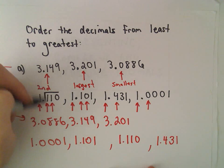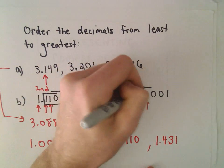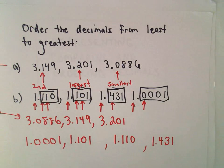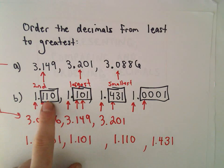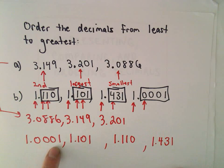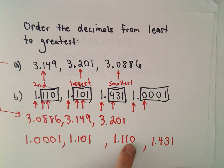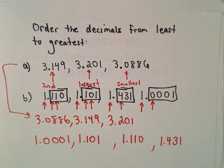Again, you could just kind of look at the decimal part and order them that way as well. So this to me kind of looks like the number 1. This looks like 1.01, this looks like 1.10, this looks like 4.31. Well, 1, 1.01, 1.10, 4.31. So another way to just kind of decide which one's the smallest and which one's the largest.